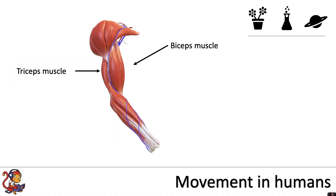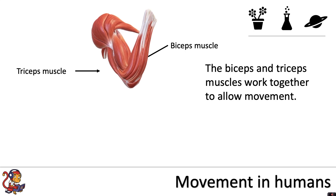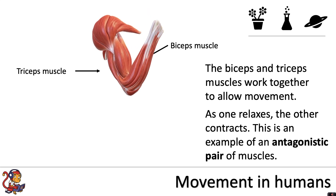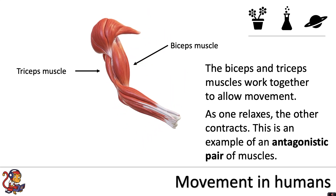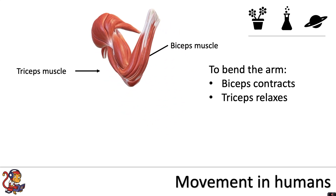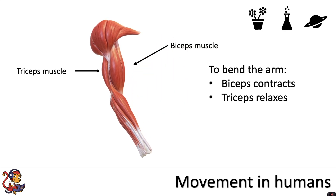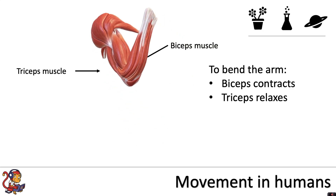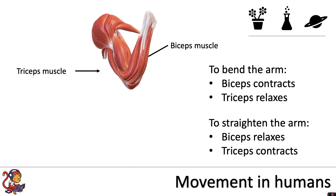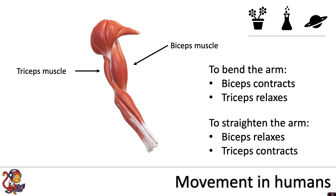We'll now look at how muscles are involved in movement, focusing on the pair of muscles on the upper arm: the biceps at the front and the triceps at the back. The biceps and triceps work together — as one relaxes, the other contracts. This is an example of an antagonistic pair of muscles. To bend the arm, the bicep contracts and the tricep relaxes. To straighten the arm, the bicep relaxes and the tricep contracts.